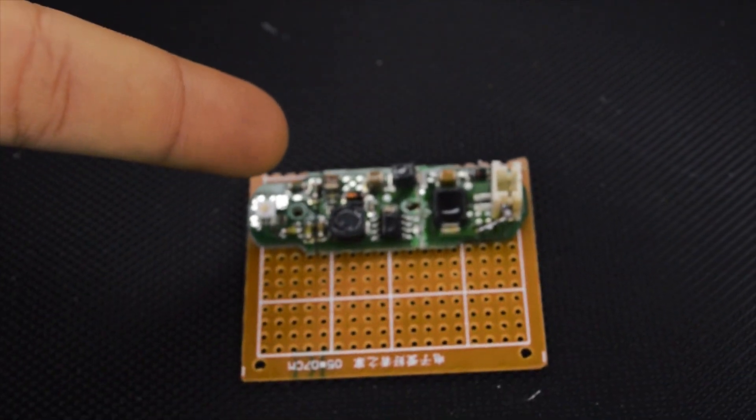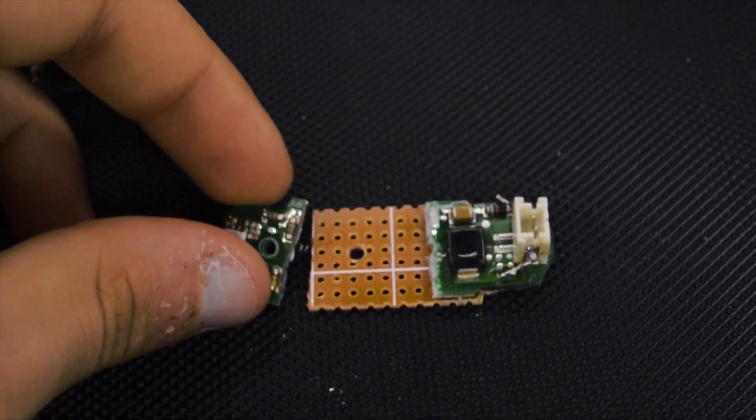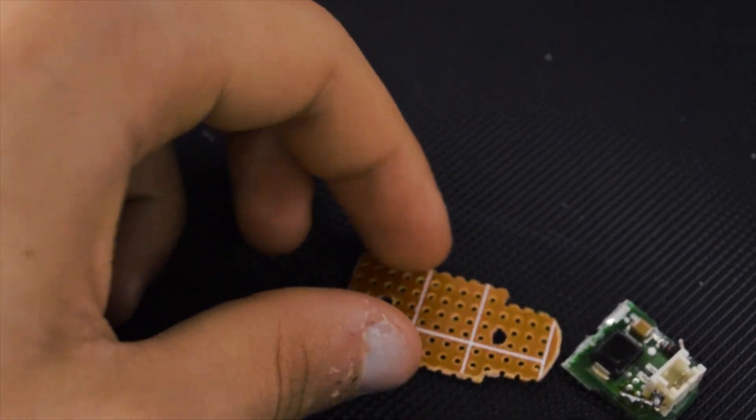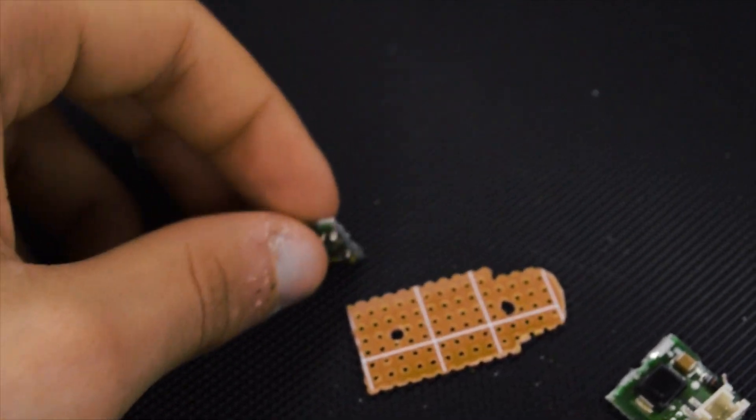Now we need a piece of PCB and cut it at the right dimensions. Nice. So now we need to solder all the components.